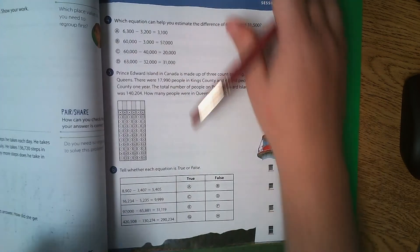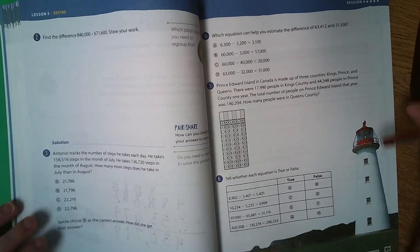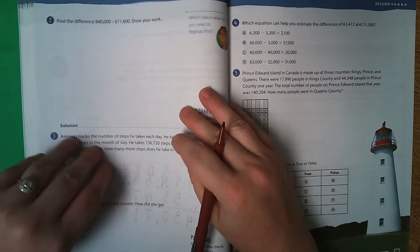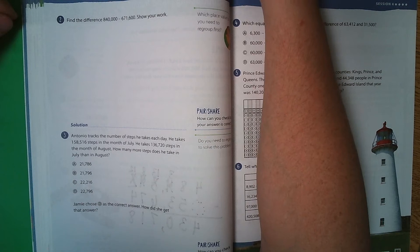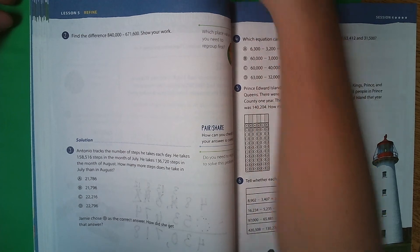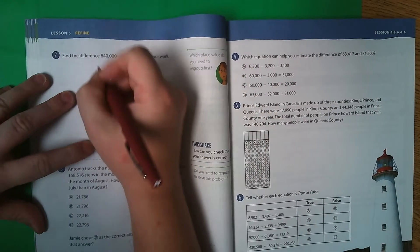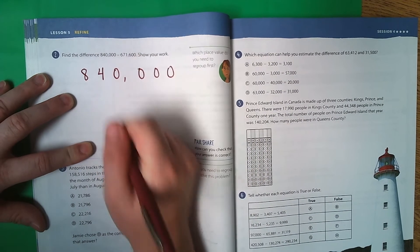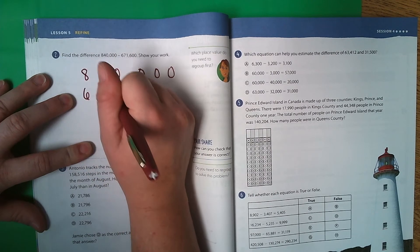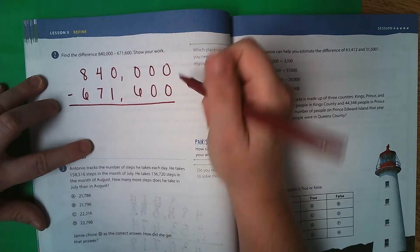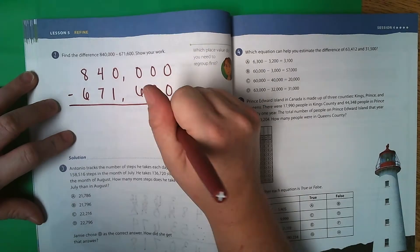Page 88. Find the difference of 840,000 minus 671,600. Show your work. So I'm going to write those numbers again, spacing them out a little bit so that way I can keep my columns for my place value lined up.